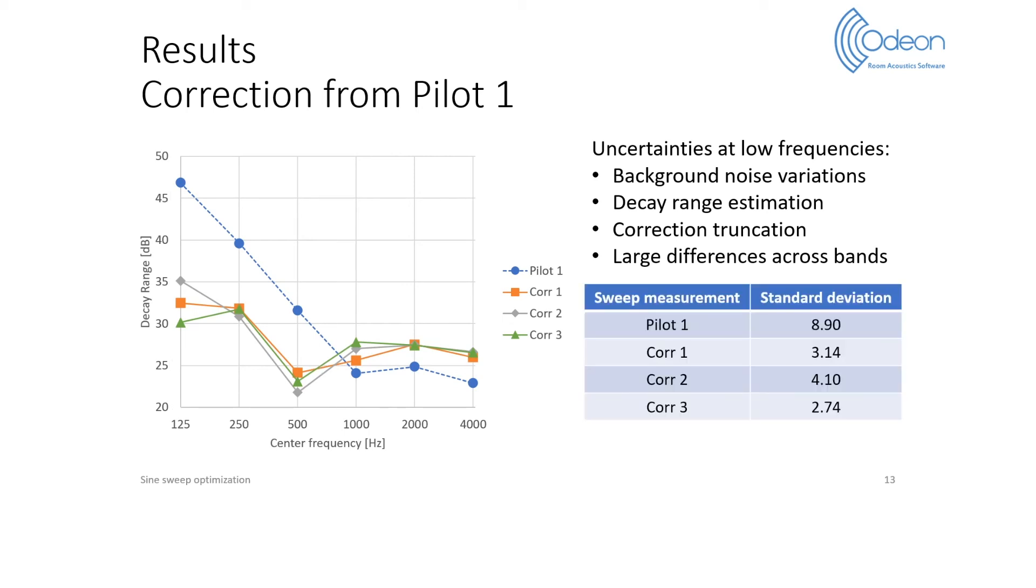A way to measure the flatness of the decay range over the octave bands is to calculate a simple standard deviation over the bands. The table on the right shows the standard deviations for the pilot and for the corrections. Overall, the three corrections lead to a reduction in standard deviation compared with the pilot's, which shows that the method is still relatively successful.